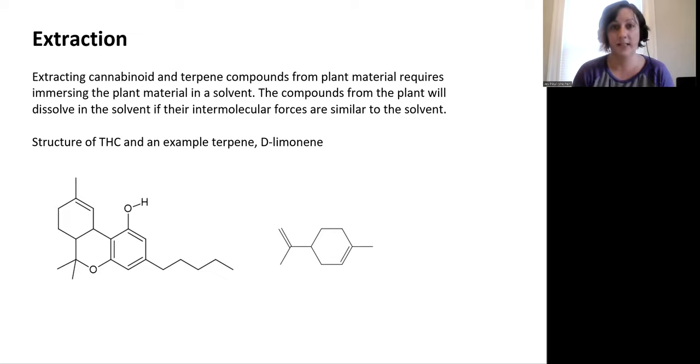And so we're going to do that for two example cannabinoids and terpene. We're going to look at THC still and D-limonene. THC is our cannabinoid and D-limonene is one of the terpenes found in cannabis. So here I have their line structures to simplify them as the Lewis dot structures are very crowded. And I'll label these real quick.